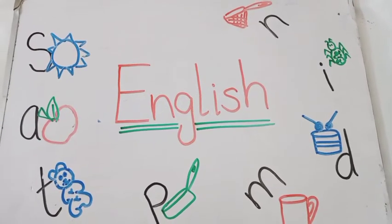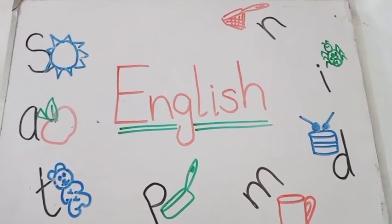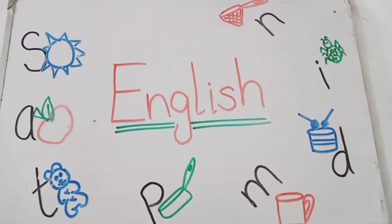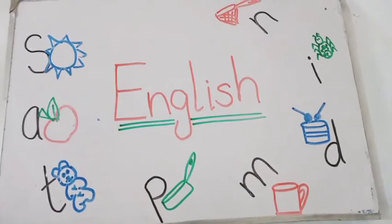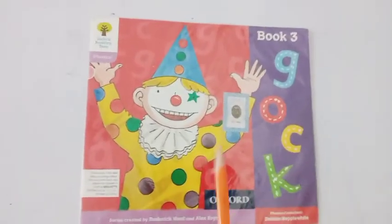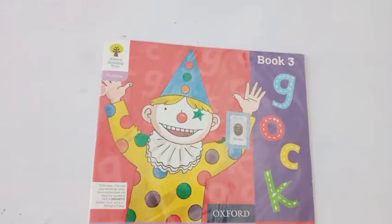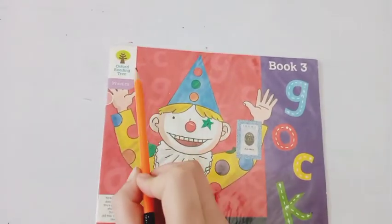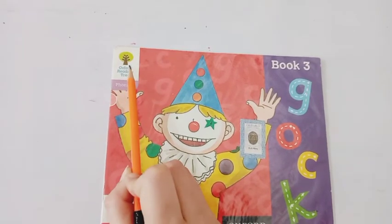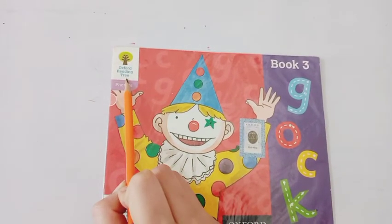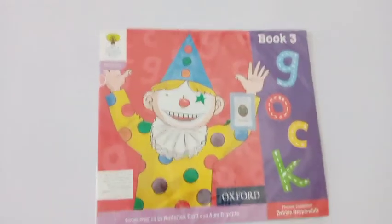Today, we will start Book 3. So let's start your Book 3. Here is your phonics Book 3. The small tree at the left corner of this book is the Oxford Reading Tree. It means this book belongs to this reading tree.